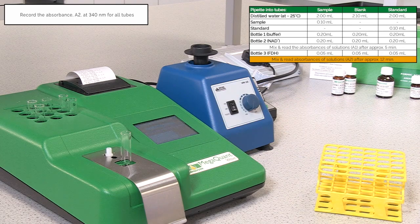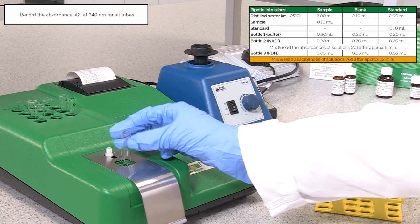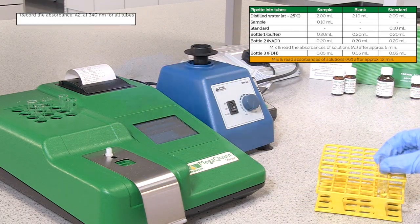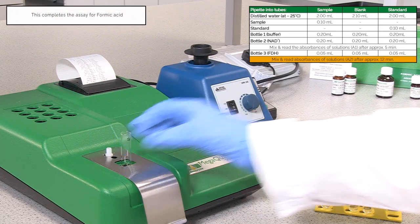Record the absorbance reading A2 for all of the assay tubes. The absorbance reading completes the measurement of formic acid.